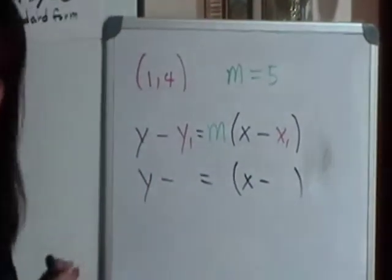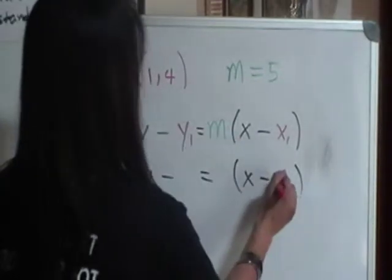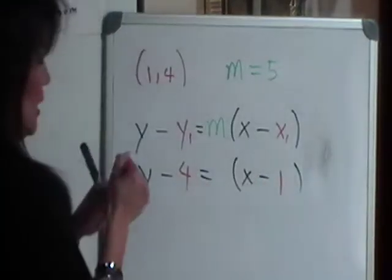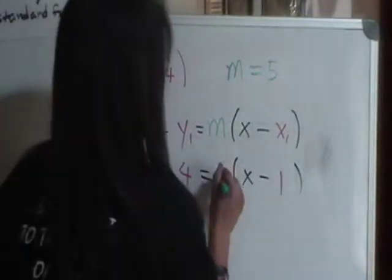Let me see, so our point is 1, 4, so the x-coordinate is 1, the y-coordinate is 4, and we know that m is 5, so we put 5 here.